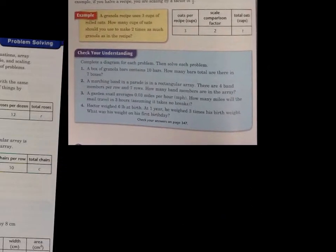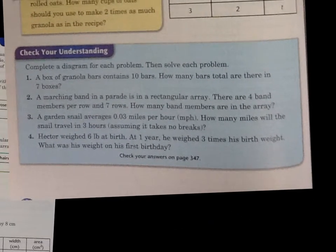We're going to take a look at some problems down below. Number 1 says, okay, so we know we have 10 bars in a box times 7 boxes. What does that equal? Good, 70.